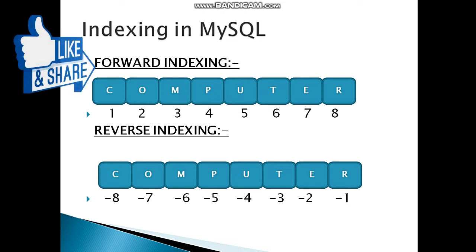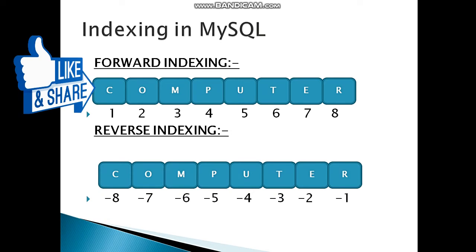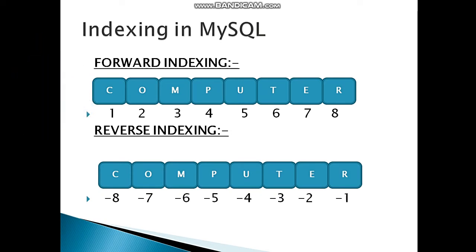One important thing to keep in mind in MySQL is that indexing starts from one, whereas in other programming languages such as Java, Python, and C, indexing starts from zero. In reverse indexing, it starts from minus one, starting from the right side.